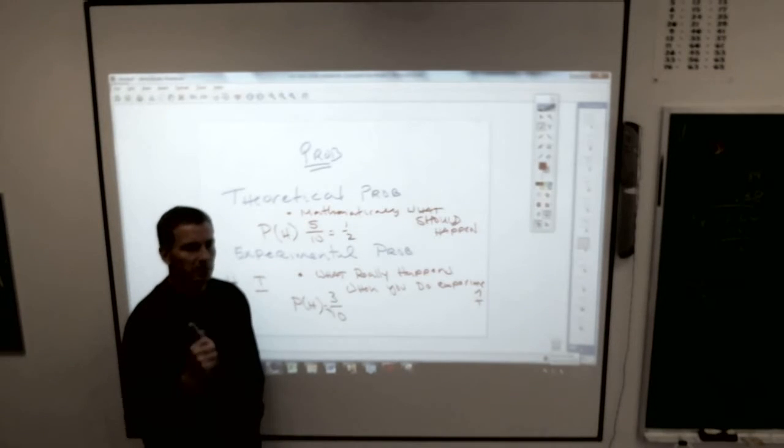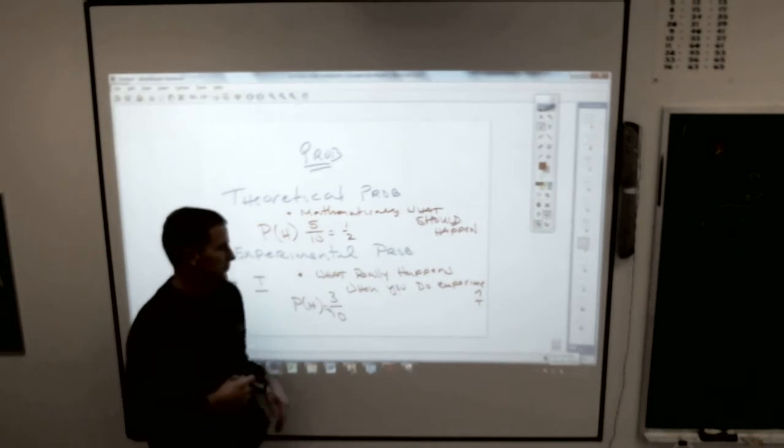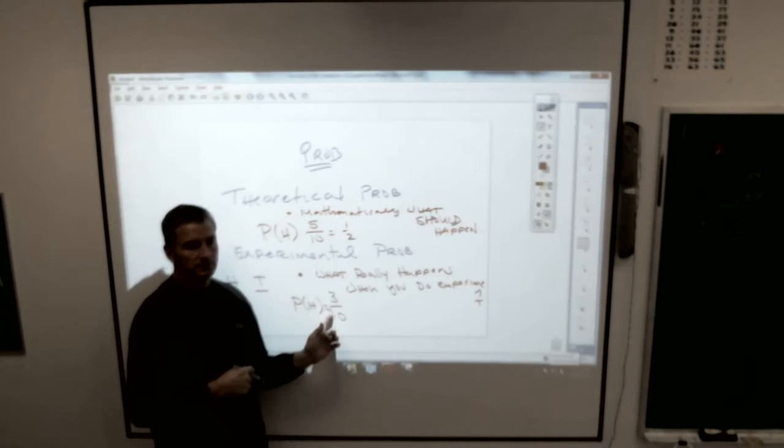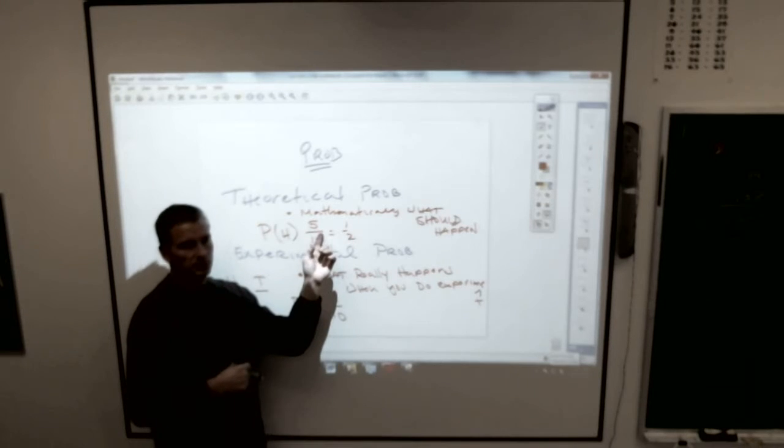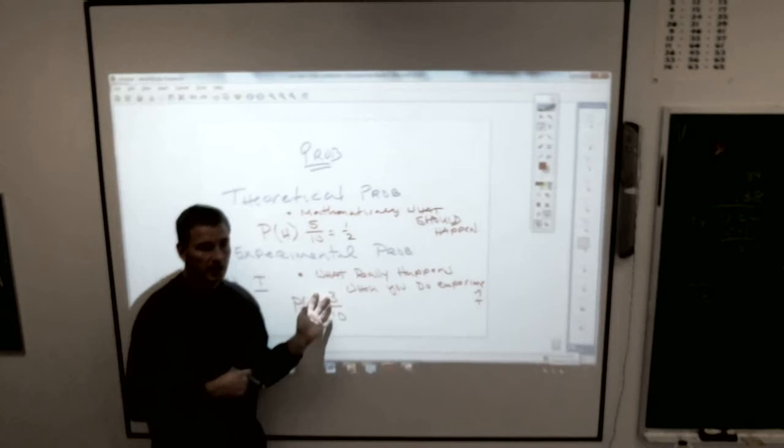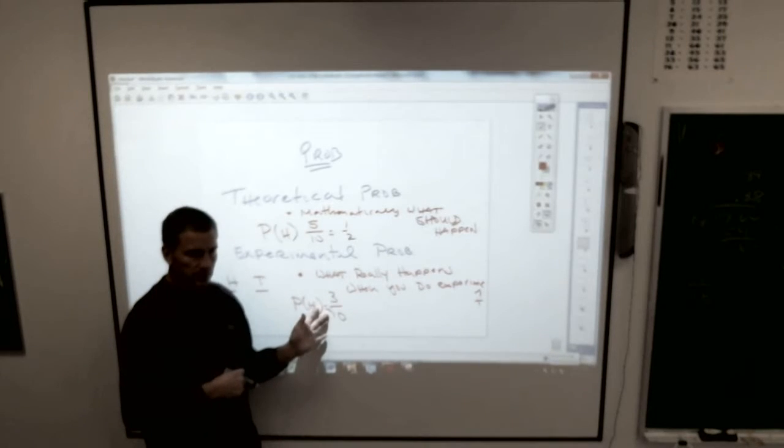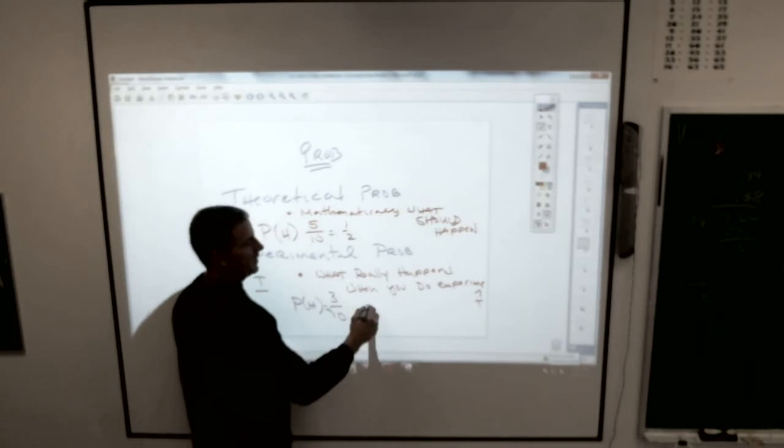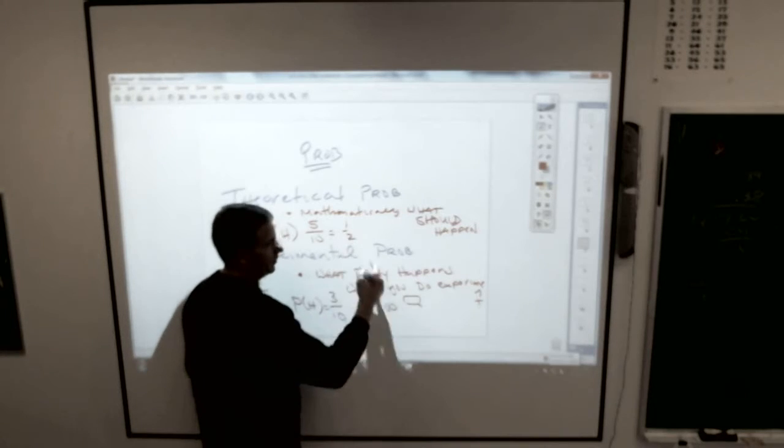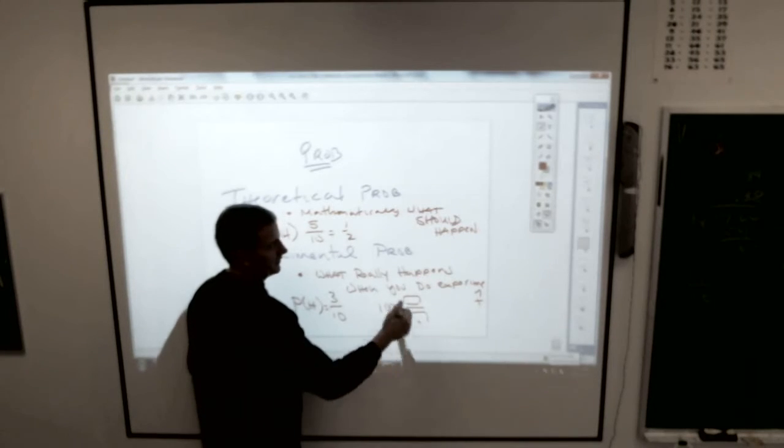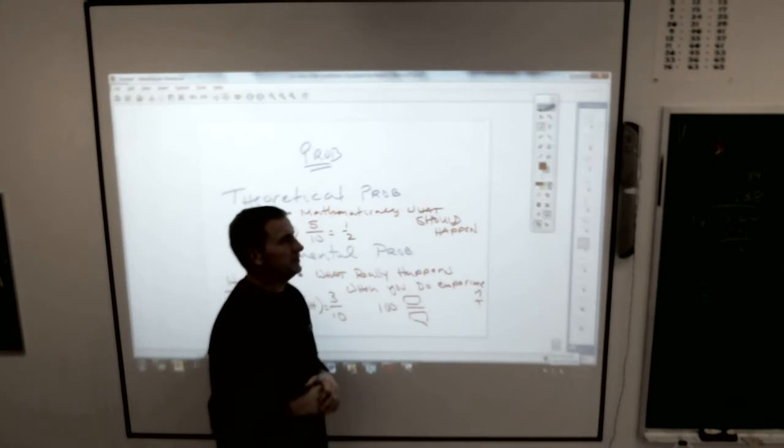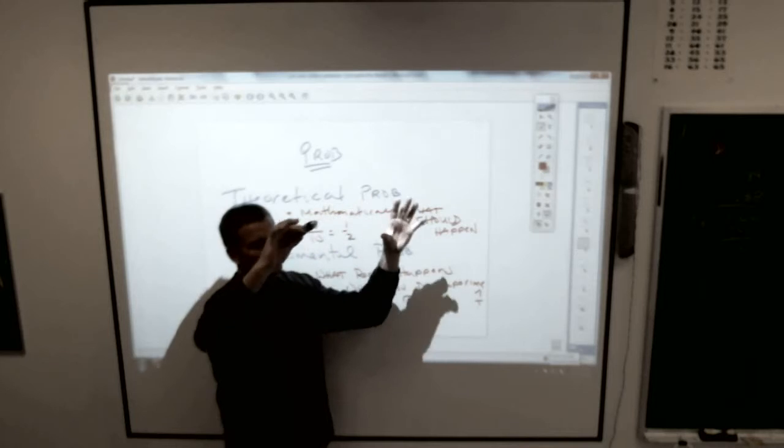If you do a problem enough times, if you do the experiment enough times, see how this is kind of a long ways off. Three out of ten is nowhere close to really five out of ten. When you think about the percentage, that's 50%, that's 30%. But I can guarantee you, if I did this experiment a hundred times, I would get closer to that one out of every two times. And if I did it a million times, it would be very, very, very incredibly close.